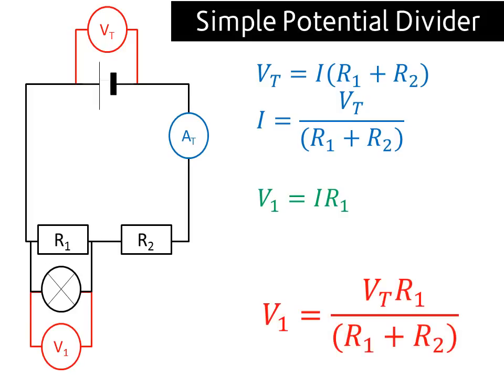The terminal voltage multiplied by R1 divided by the sum of R1 plus R2 gives us the voltage at V1. And that's how a simple potential divider works.